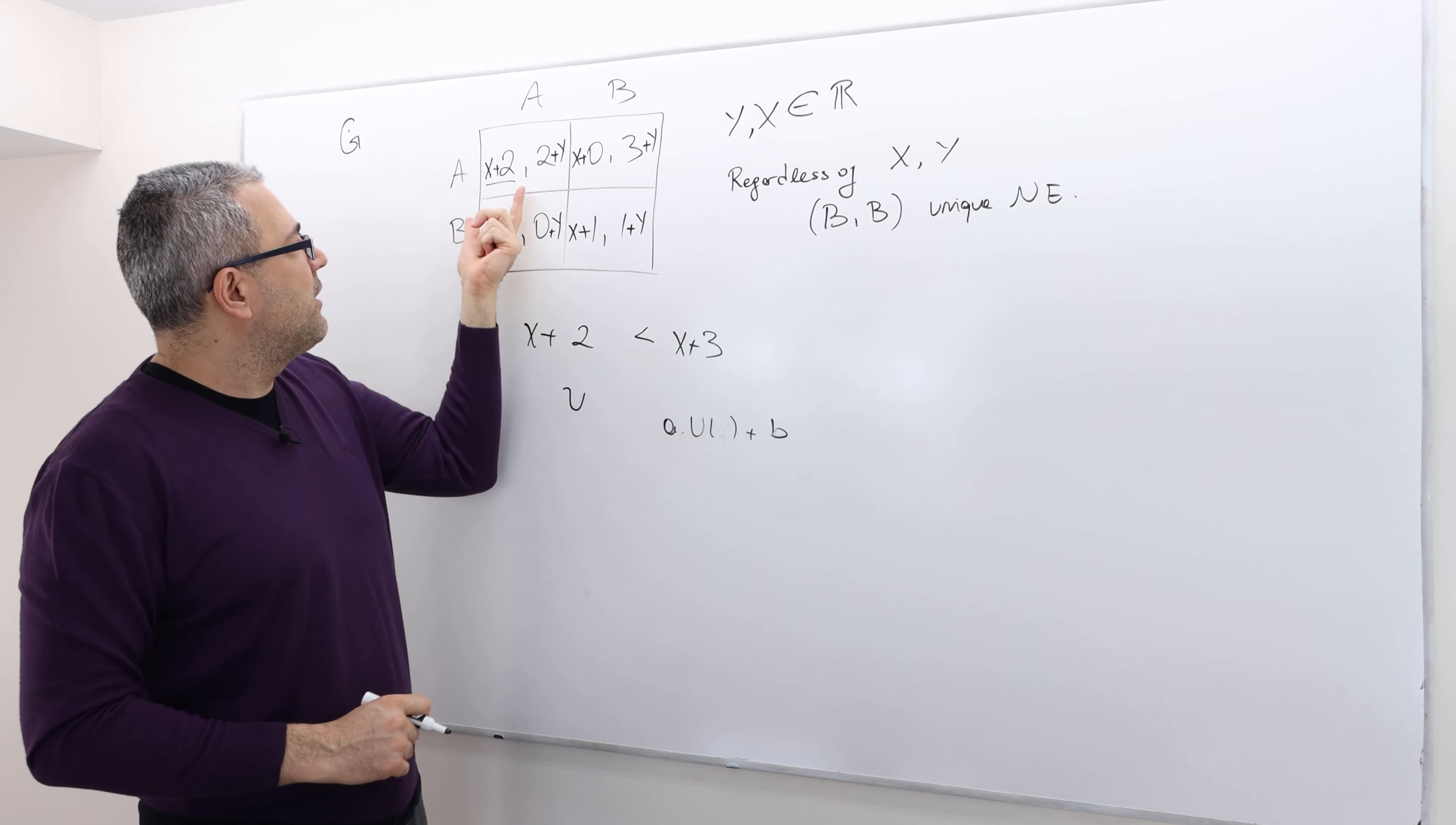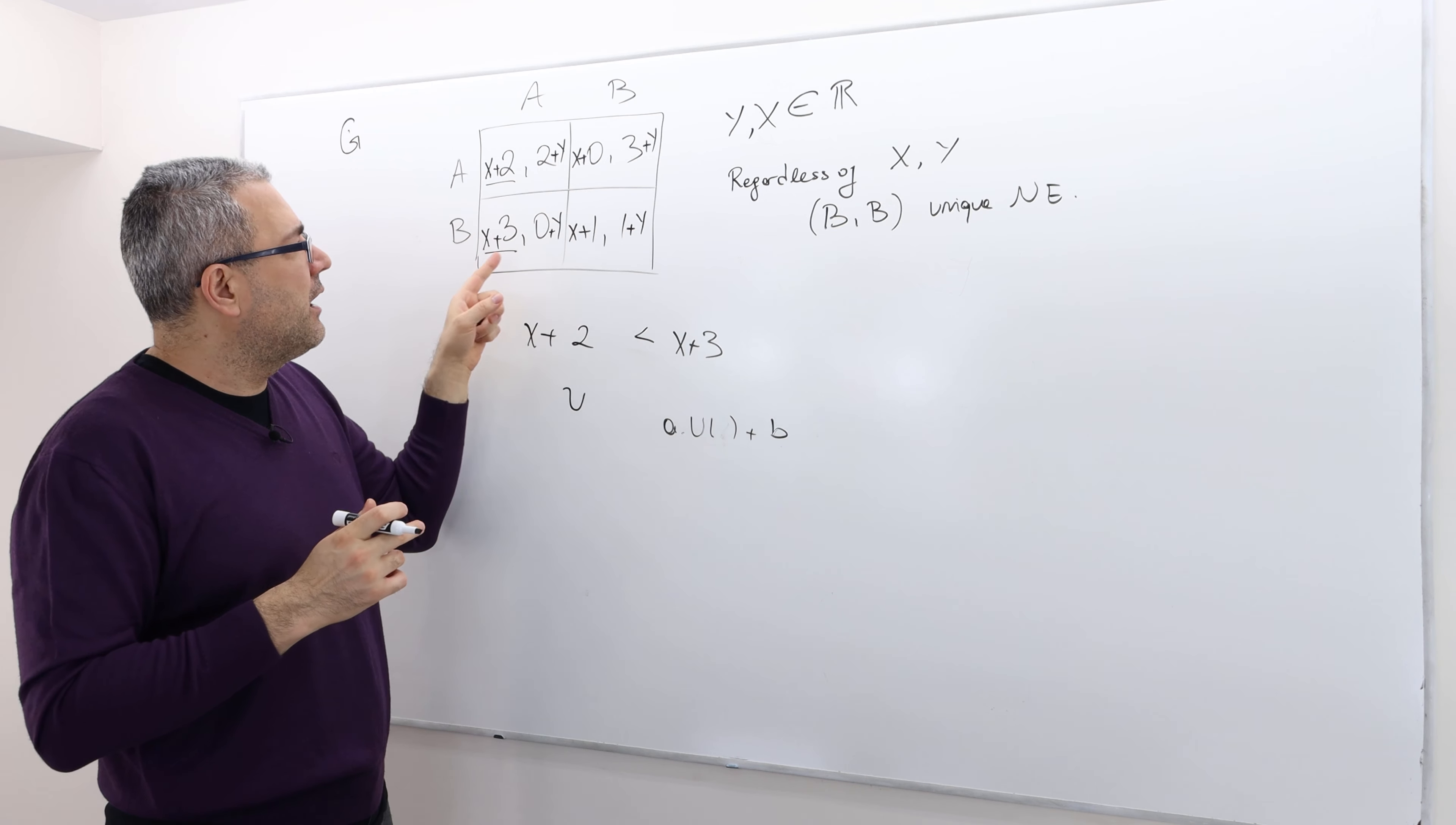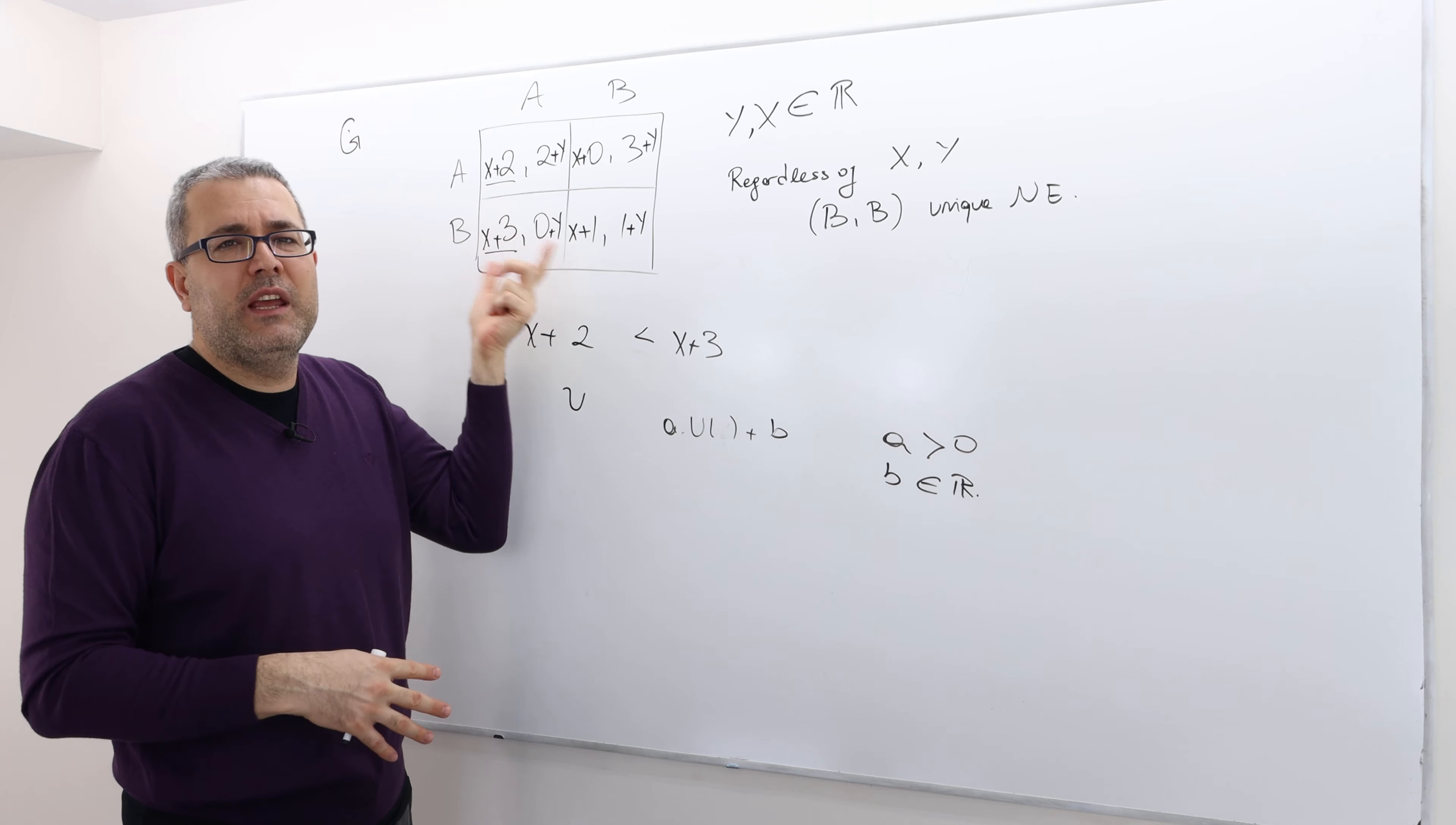So A times U of X plus, or U of whatever plus B, is also representing this agent's preferences. So here, basically, I applied, added X. So my B is X here, and A is still constant, A is one. I did not multiply anything. So you see what I mean? So therefore, whether, I mean, again, it's like adding X and Y here doesn't change Nash equilibrium. But also, multiplying all the payoffs with a positive constant here, A being positive is critical, by the way, but B can be any real number. So because of this property of the expected utility function, well, thanks to that property, we have these properties.